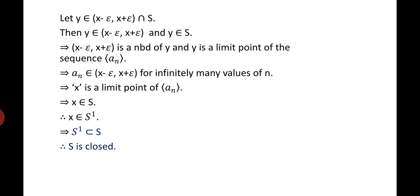Let Y be an element of (X - epsilon, X + epsilon) ∩ S. Then Y belongs to (X - epsilon, X + epsilon) and Y also belongs to S. This implies (X - epsilon, X + epsilon) is a neighborhood of Y, and since Y is a limit point of A_N, A_N belongs to (X - epsilon, X + epsilon) for infinitely many values of N. This implies X is a limit point of A_N, meaning X belongs to S. Since S' ⊆ S, therefore S is closed.